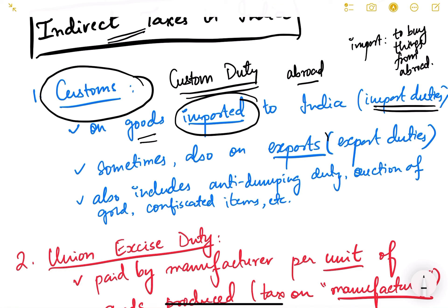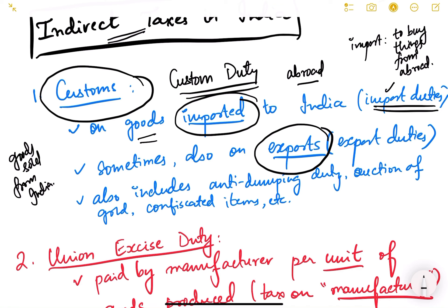Sometimes custom duty is also imposed on exports — goods sold from India. So custom duty is basically both import duty and export duty. But export duties are very few in number, so most of the custom duties are import duties only in our country.